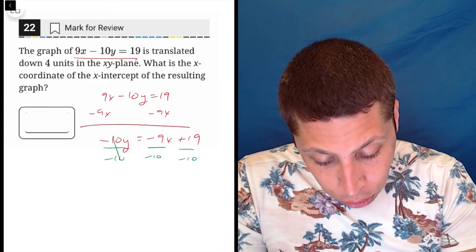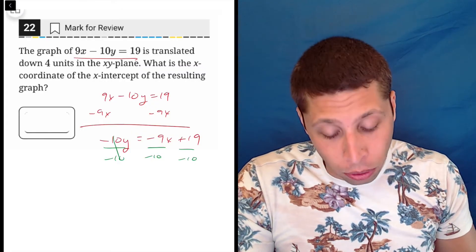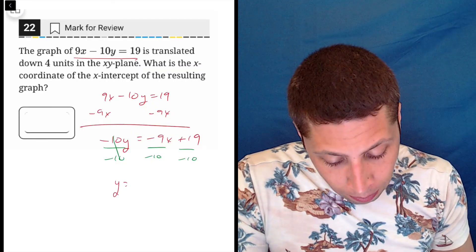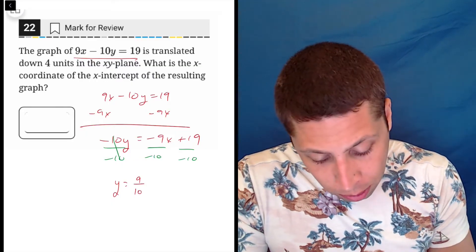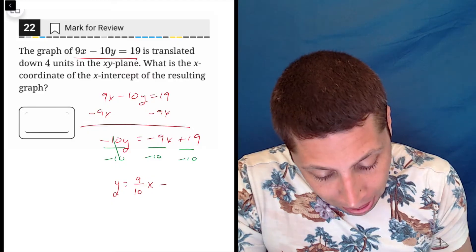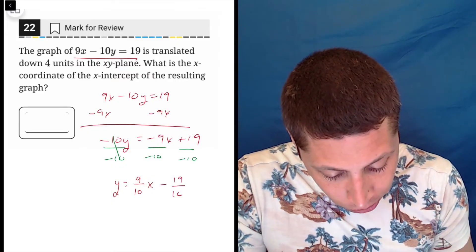And whether you leave it as a decimal or a fraction, it's kind of up to you. I'm going to leave it as a fraction for now. So two negatives become a positive. It's 9 tenths X minus 19 over 10.